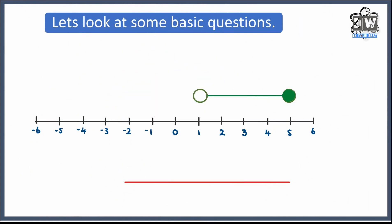Now I want you to think about what this one could be — it's one where x is in the middle. So what we've got is x in the middle: x is going to be bigger than 1, but it's going to be smaller than 5. Because the right circle is shaded in, it's going to be equal to 5. So the range is between 1 and 5 — x is bigger than 1 but smaller than or equal to 5.